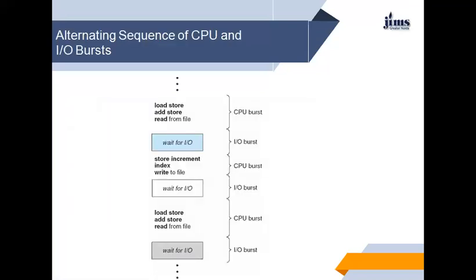This diagram shows an alternative sequence of CPU and input-output bursts. The CPU is performing operations like load, store, add, and read from file — that is called the CPU burst. When the process needs input-output, the CPU waits — that is called the input-output burst. This alternates: CPU burst, then input-output burst, then CPU burst again, and so on.